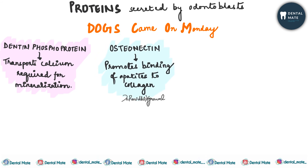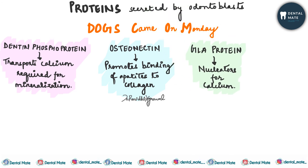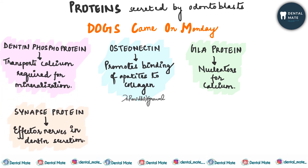Osteonectin inhibits the growth of hydroxyapatite crystals by promoting their binding to collagen. Next is the GLAA protein, that is gamma carboxyglutamic acid protein. These contain proteins and phospholipids and act as seeds or nucleators for calcium — they attract and concentrate calcium. Next is the synapse protein.